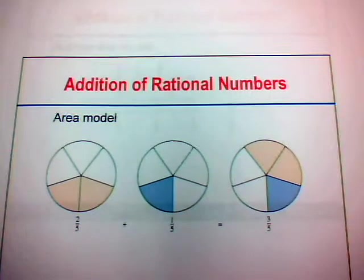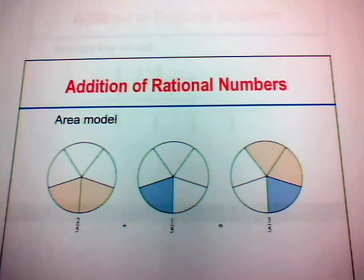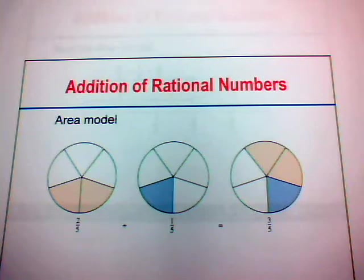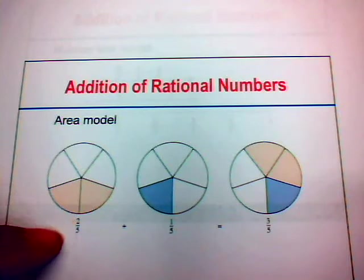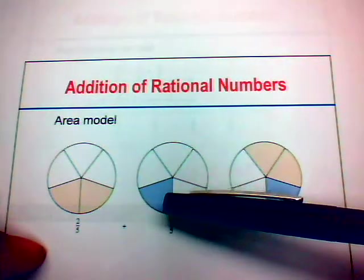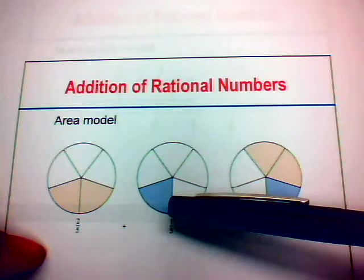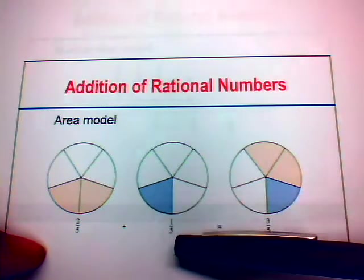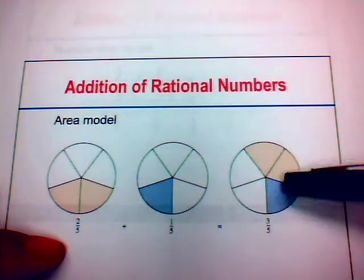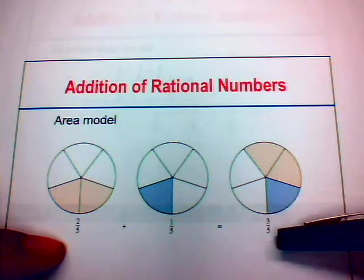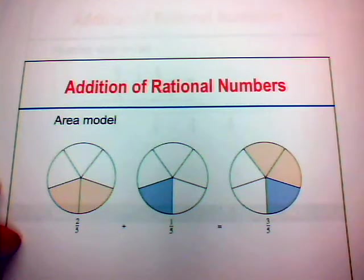The first thing we'll talk about is addition of rational numbers. Here we have the area model as a model for illustrating graphically how we can add rational numbers. In this illustration, we have two out of five pieces shaded, which represents two-fifths. And then in this one, we have one out of five pieces shaded — that's one-fifth. So if we add two-fifths and one-fifth, we have a total of three out of five shaded pieces, which is a representation of three-fifths.